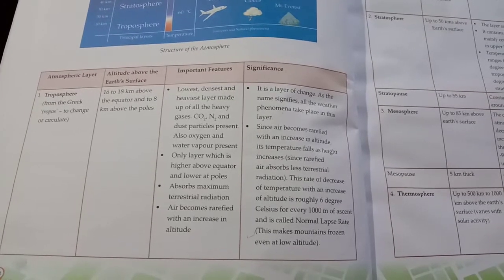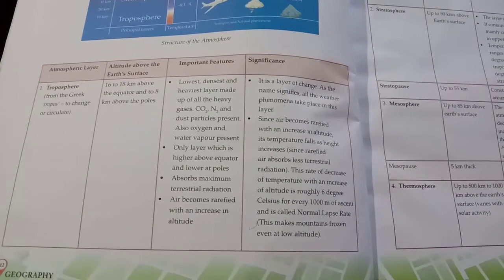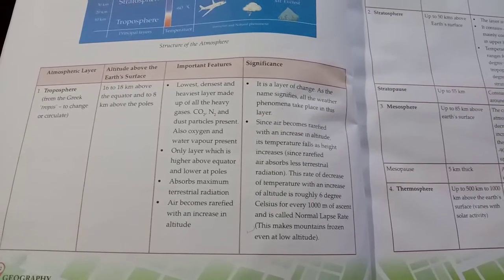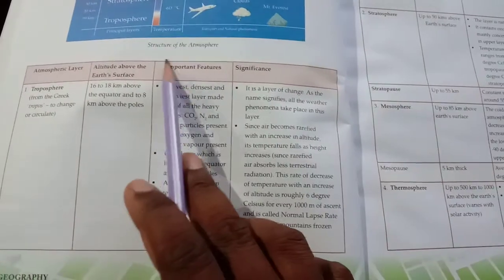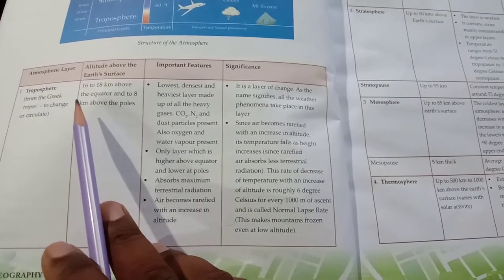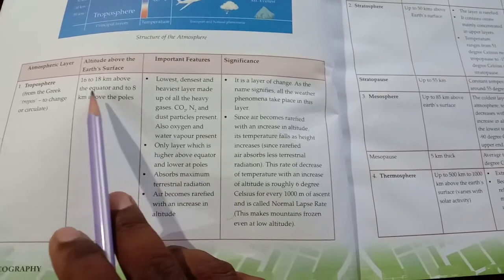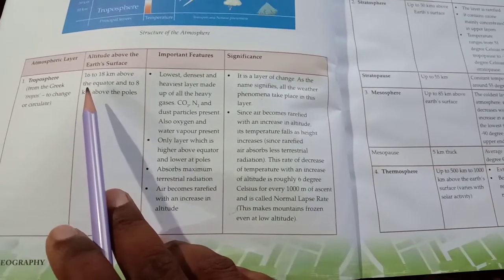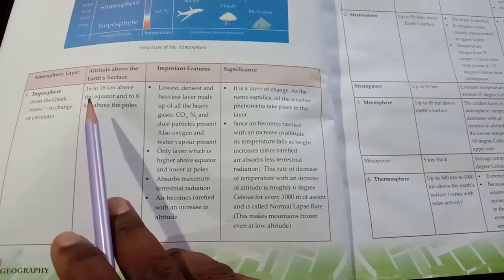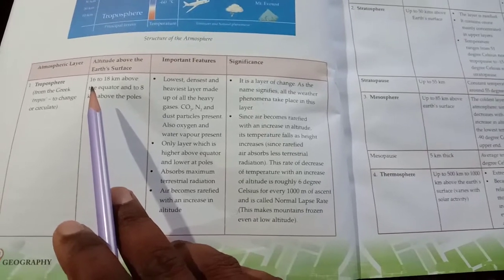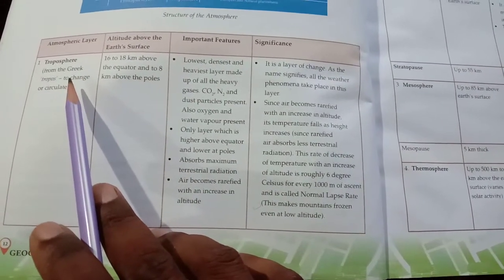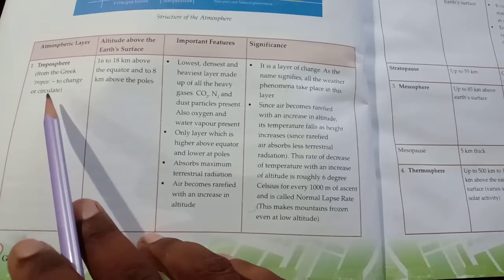Good morning, dear Class 7 students. Let us continue the second chapter with the structure of the atmosphere. Today we will deal with atmospheric layers or structures which are found at different levels of height in the sky. Troposphere — from the Greek 'tropo,' meaning to change or circulate.